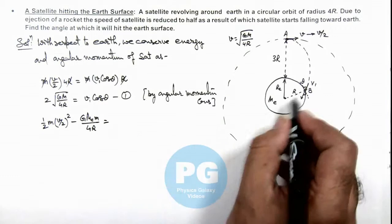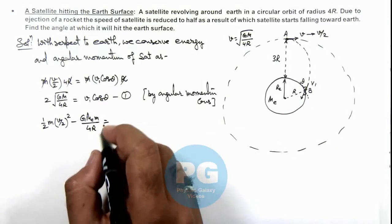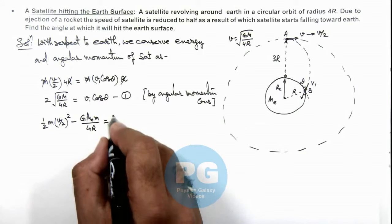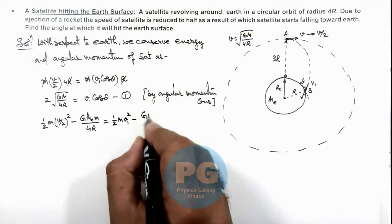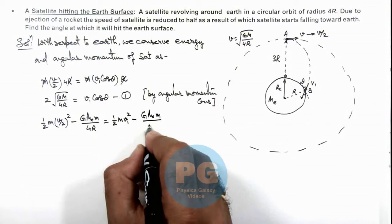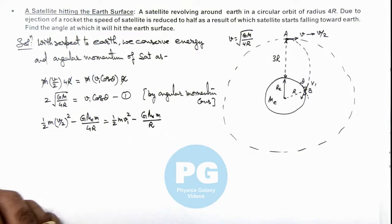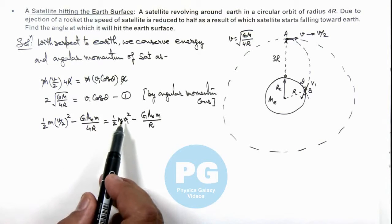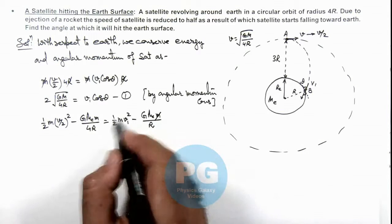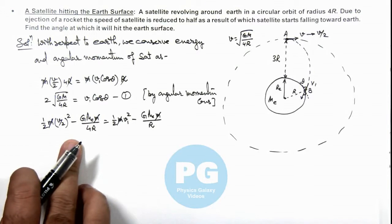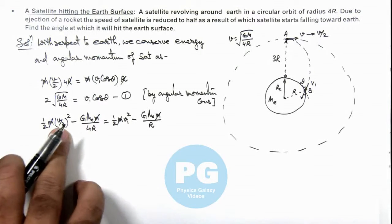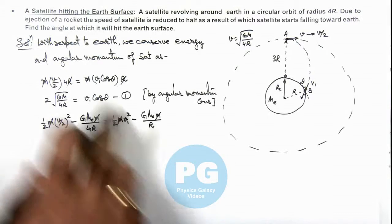This is equal to the kinetic energy at the point where it hits the Earth surface: ½mv1² - GMEm/RE. Now in this situation, we can substitute the value of v1. Here, m also gets cancelled out, and if you substitute the values of v and v1 and simplify...